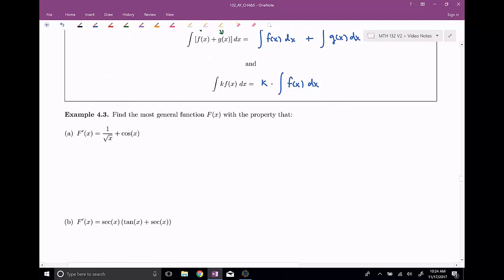Find the most general function F(x) with the property that F prime of x is equal to one over root x plus cosine x. So that is, I would like to go ahead and find the indefinite integral of one over root x plus cosine of x dx. Maybe our first step would be to rewrite this, as x to the negative one-half power plus cosine of x dx.